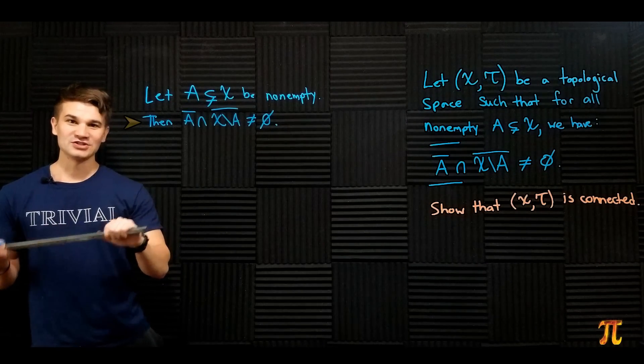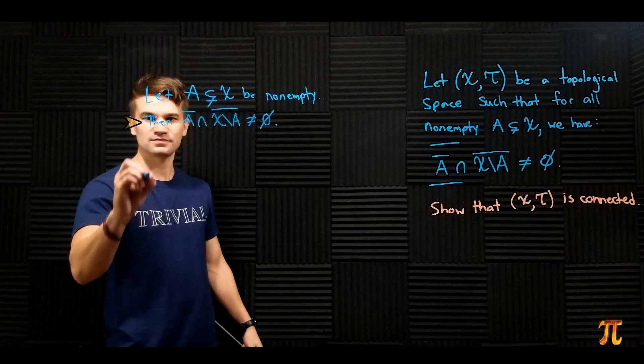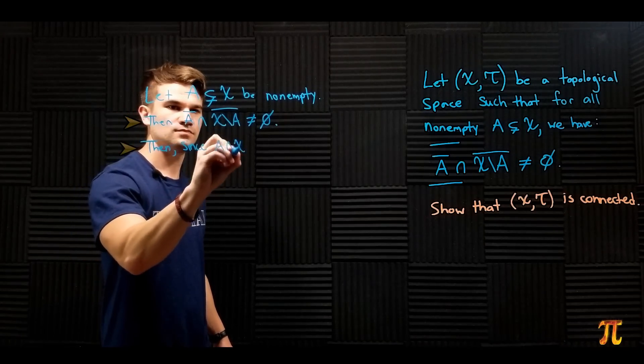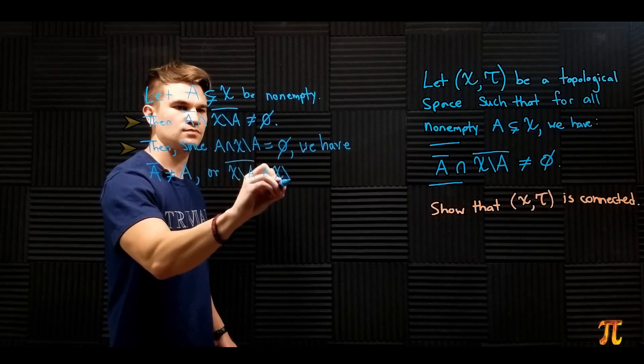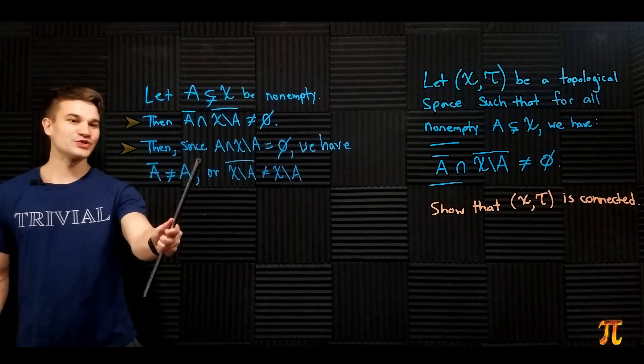So we have that A's closure is not equal to A, or (X \ A)'s closure is not equal to X \ A.